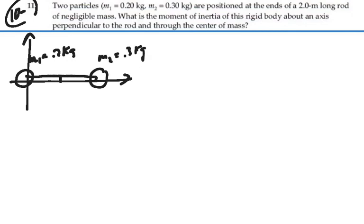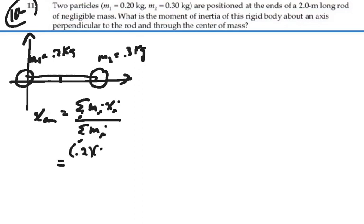We wish to find the center of mass of this system, so the center of mass on the x-axis equals the summation of every mass multiplied by its position over the total mass of the system. So in this case, that would be mass 1, which is 0.2 kilograms, multiplied by its position, 0,